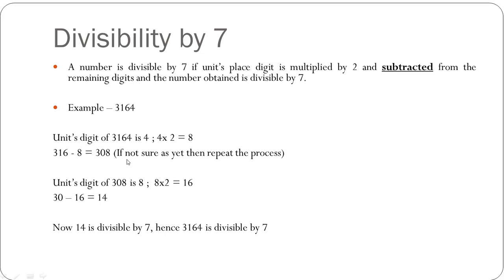But if you are not sure as yet, then you can further repeat the process. You find the units digit of 308, which is 8. You multiply that by 2 and you get 16. Then you subtract 16 from the remaining digits, which is 30. So 30 minus 16 gives me 14. Now this is basic math — everyone knows that 14 is divisible by 7. Hence the number 3164 is divisible by 7.